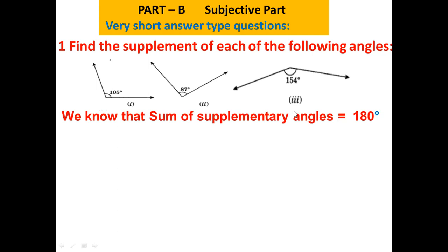Now if I have to find the supplement of 105 degrees, I need to subtract this from 180. So supplement of 105 degrees is equal to 180 degrees minus 105 degrees. Upon subtraction I get 75 degrees.